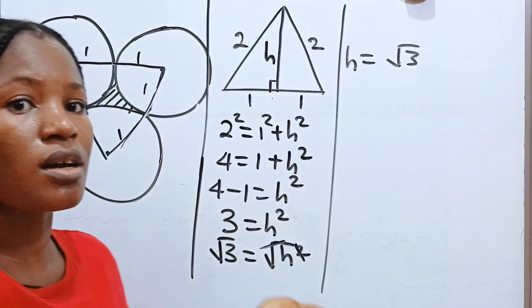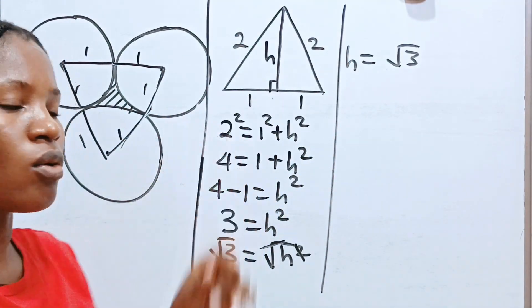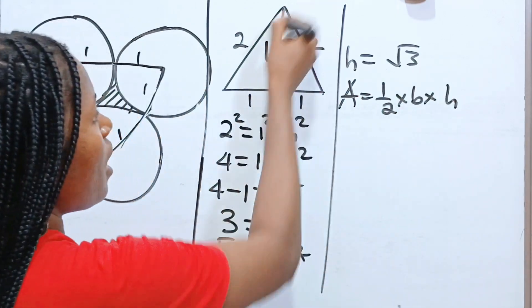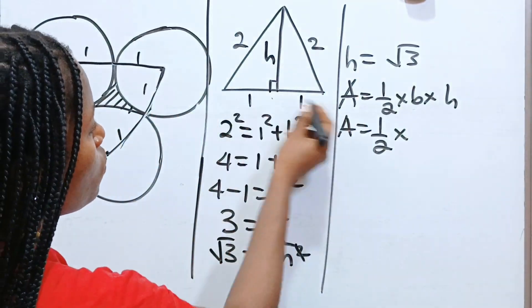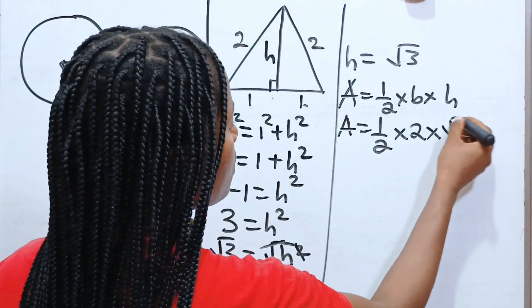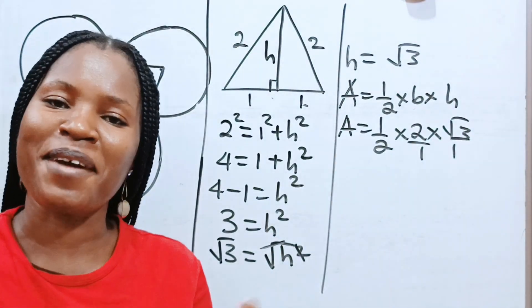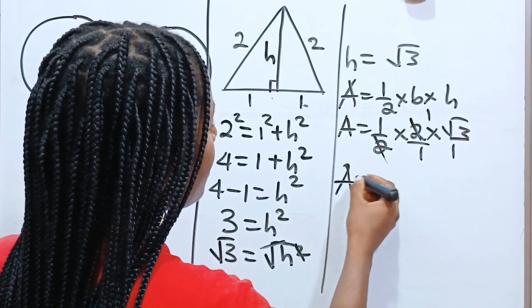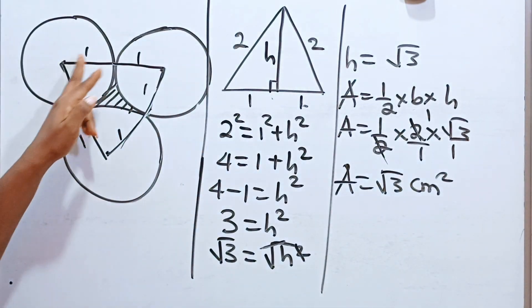Now we have our height. The area of the triangle is half multiplied by base multiplied by height. The base is 1 plus 1, which is 2, and our height is root 3. So the area is one-half times 2 times root 3, which gives us root 3 centimeters squared.